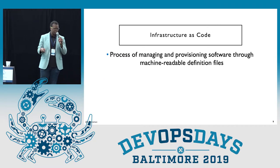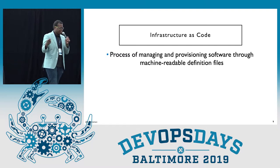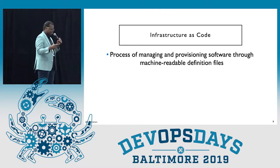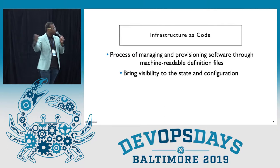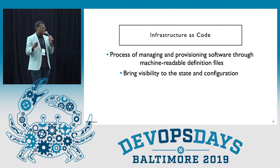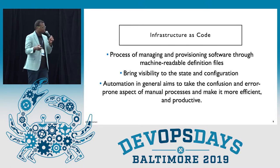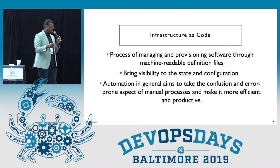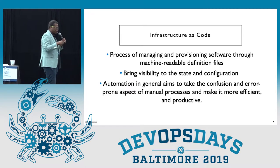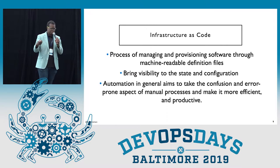We want to make it repeatable so it can be compared across multiple different runs. In DevOps, we use infrastructure as code to help facilitate processes similar to this. It brings visibility and state of configuration of what's going on in your DevOps pipeline. It makes it autonomous and gets rid of a lot of the manual steps that are error-prone. We're also trying to create a machine learning pipeline in that same way.